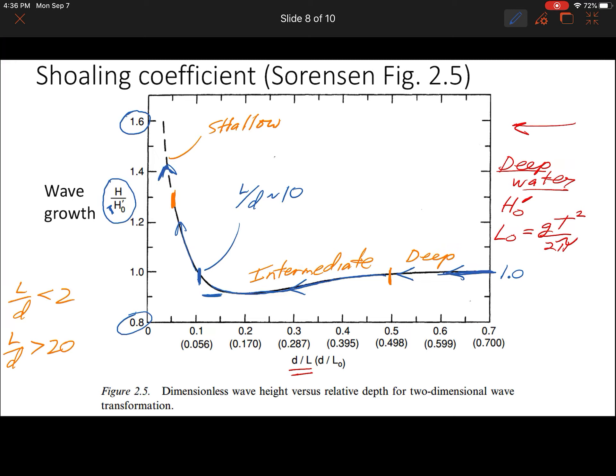Now the way to use it is to actually start with your deep water parameters out here, calculate your deep water wavelength, and then you figure out the wave height at some location closer to the shore.